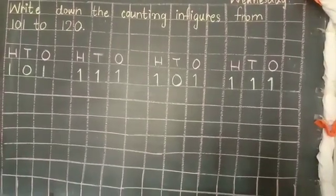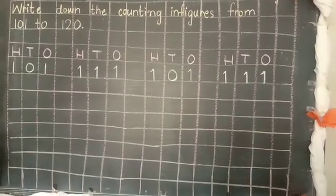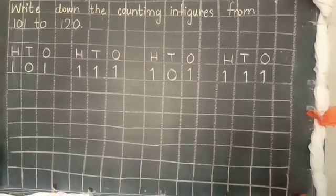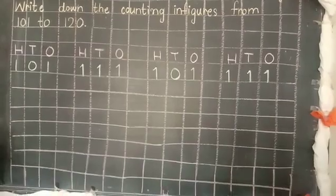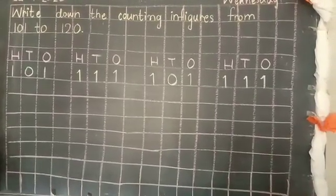Again, leave one line: H, T, O - 1, 0, 1. Again, leave one line: H, T, O - 1, 1, 0, 1.